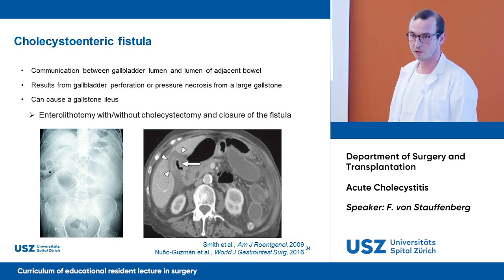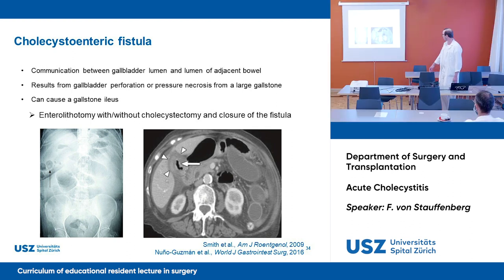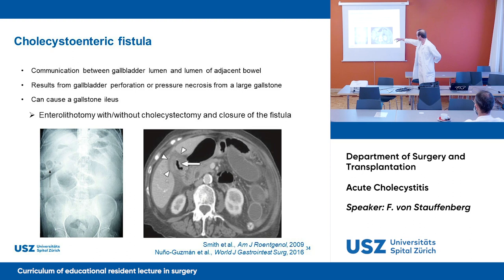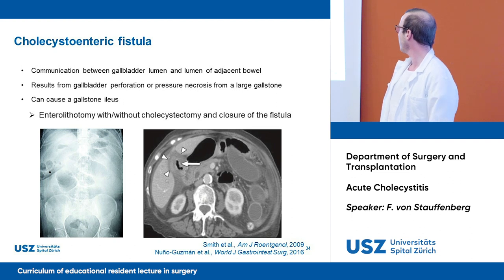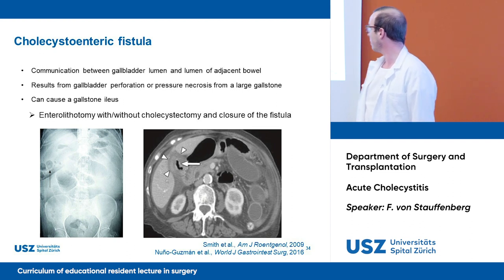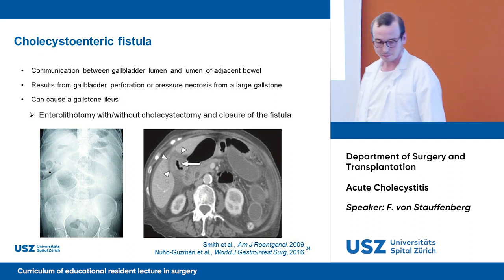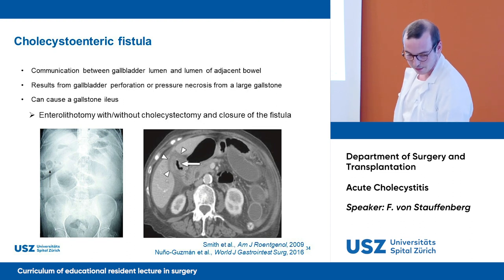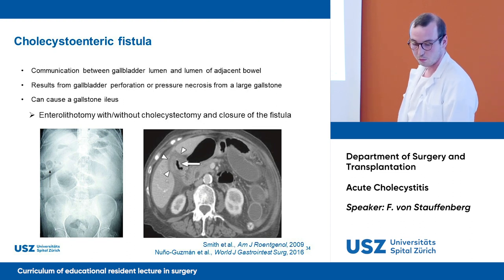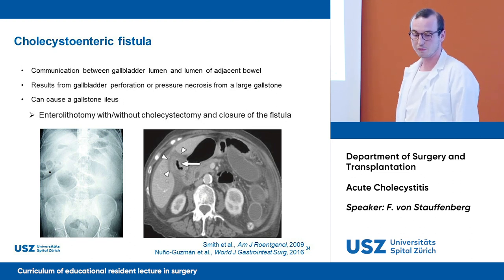The fistula can cause a gallstone ileus, visible on X-ray as dilated bowel with a stone in it. On CT scan, you can see aerobilia due to air arising from the bowel lumen into the gallbladder. Treatment of choice would be enterolithotomy with or without cholecystectomy and closure of the fistula, depending on the surgeon.